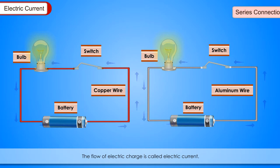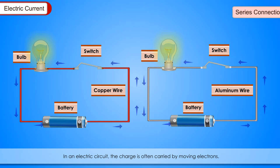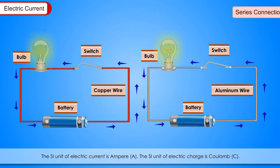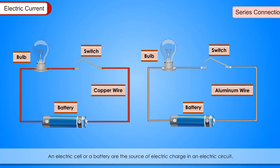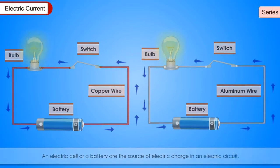Some common components of an electric circuit: Cell or battery provides electrical energy. Power supply can be used in place of cells. Wire allows current to pass through it. Bulb or light converts electrical energy into heat and light. Switch allows circuit to be opened or closed. Electric current: The flow of electric charge is called electric current. In an electric circuit, the charge is often carried by moving electrons. The SI unit of electric current is ampere. The SI unit of electric charge is coulomb. An electric cell or a battery are the source of electric charge in an electric circuit.